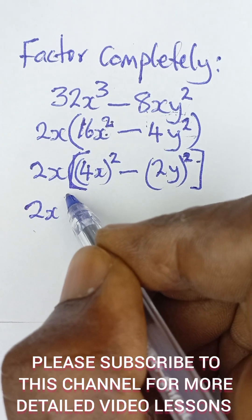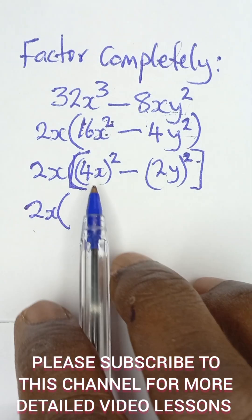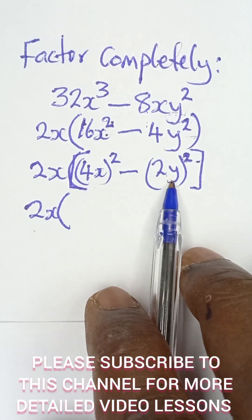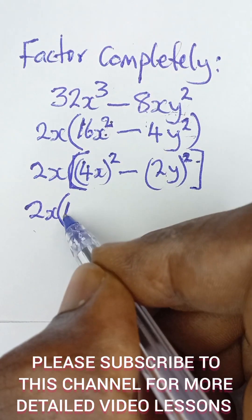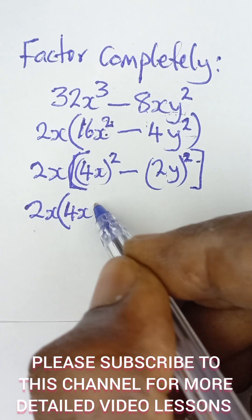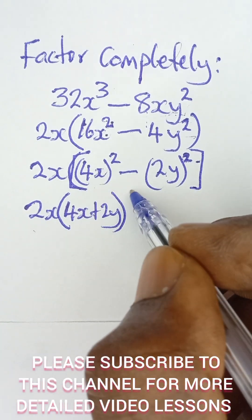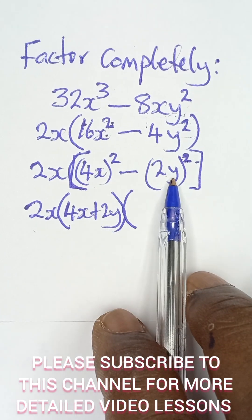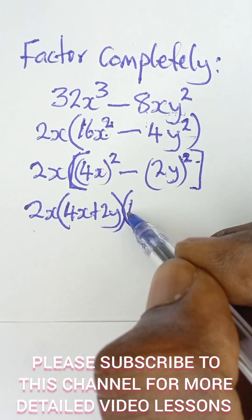So take this and add it to this. So I can simply write 4x plus 2y, and then open up another bracket, take this and say minus this. That is how to factor difference of two squares. So 4x minus 2y.